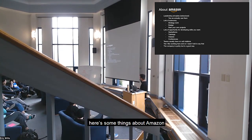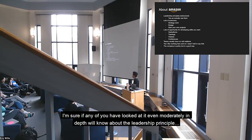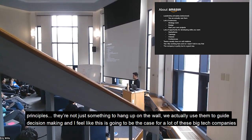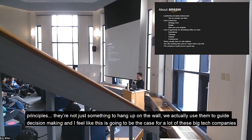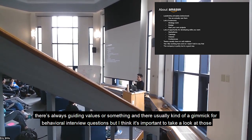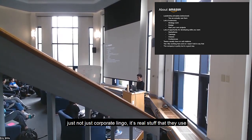Here are some things about Amazon. I'm sure if any of you looked at it even moderately, you'll know about the leadership principles. They're not just something that hangs on the wall — we actually use them to guide decision-making. I feel like this is going to be the case for a lot of companies. There's always guiding values or something. They're usually kind of a gimmick for behavioral interview questions, but it's really important to actually look at those and think about how they align with your values, because a lot of decision-making is guided by those principles. It's not corporate lingo — it's real stuff that they use.